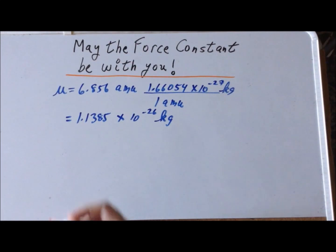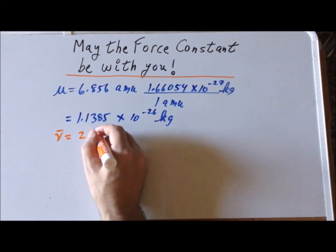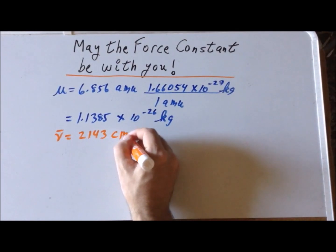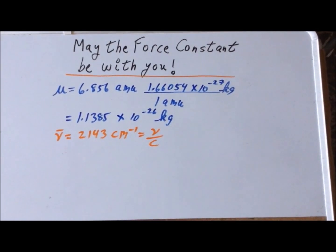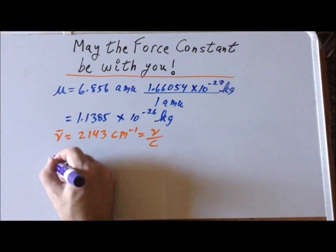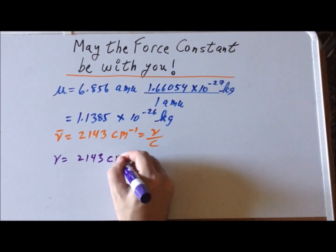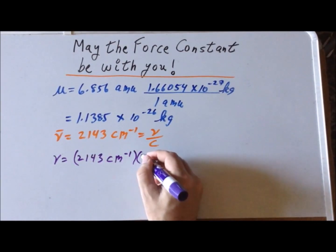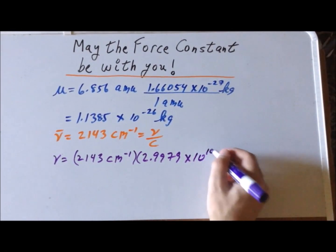Next, we recognize that the wave number frequency is 2143 inverse centimeters. This equals the linear frequency divided by the speed of light. To recover the linear frequency, we multiply by the speed of light: 2143 cm^-1 times 2.9979 × 10^10 cm/s.